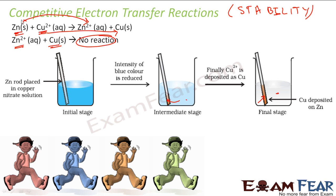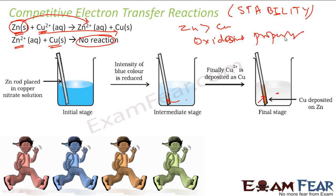Why? Because zinc can oxidize more easily than copper. If you are talking about the oxidation property, zinc is a stronger reducing agent than copper. That depends on the atomic structure — zinc wants to lose electrons more than copper does. And there is a competition between zinc and copper. Similarly, for other metals we can create a comparative chart which helps us in predicting whether a reaction will happen or not.